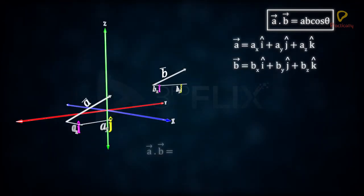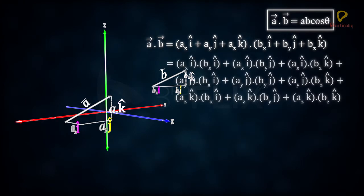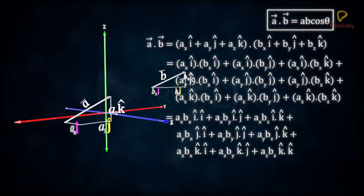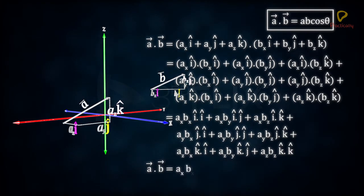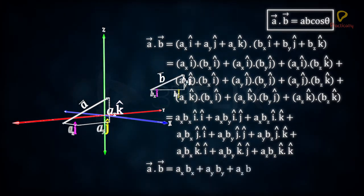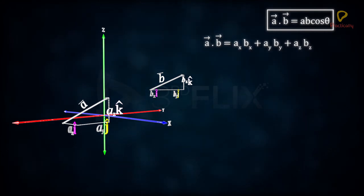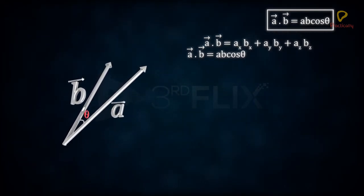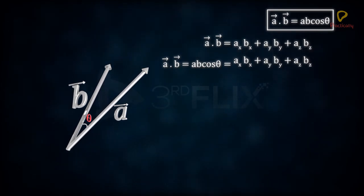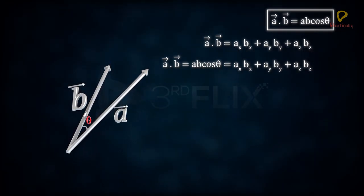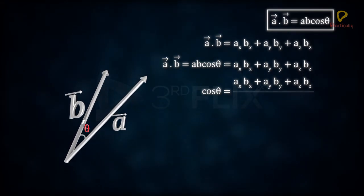Let us write A and B in unit rectangular component form. We can expand this according to the distributive law. Each vector component of the first vector is to be dotted with each vector component of the second vector. Hence, A·B equals Ax·Bx + Ay·By + Az·Bz. We can use this result to calculate the angle between two vectors: cos theta equals (Ax·Bx + Ay·By + Az·Bz) divided by AB.